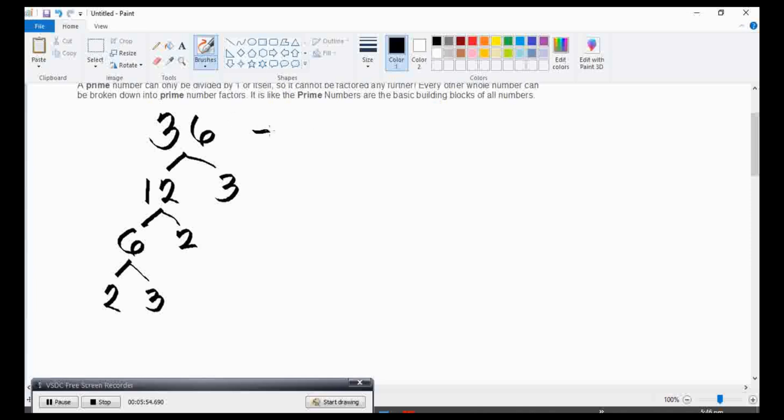Let us write. We do have 2 times 2 times 3 times 3. Or, we can simply write 2 squared multiply 3 squared. It means that you have 2 twos and 2 threes.